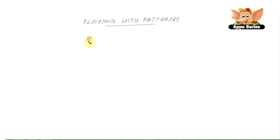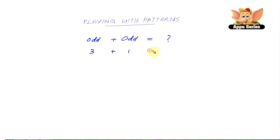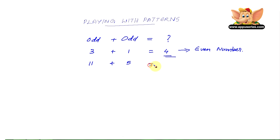And if you add two odd numbers, you always get an even number. Let's look at this. 3 plus 1 equals 4. Or, 11 plus 5 equals 16.